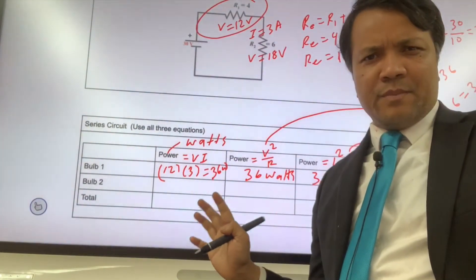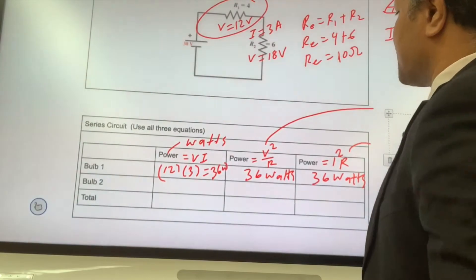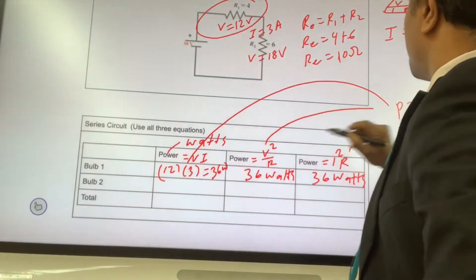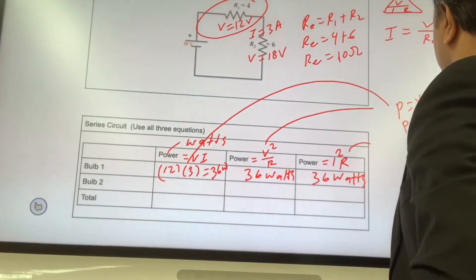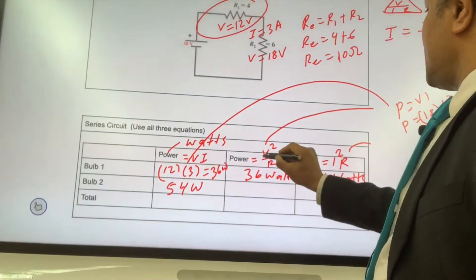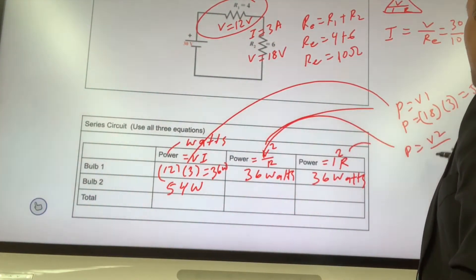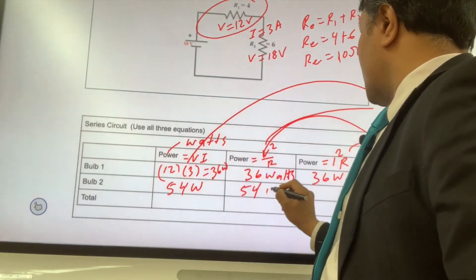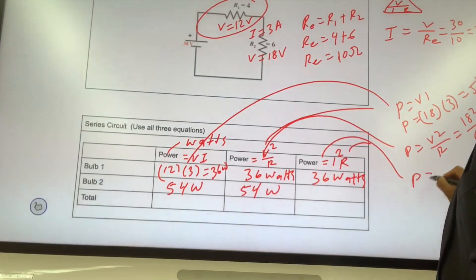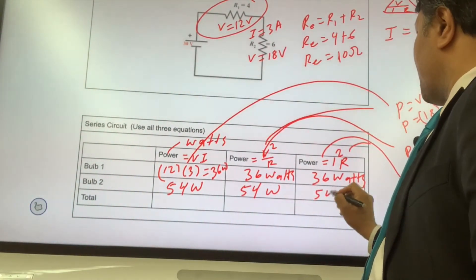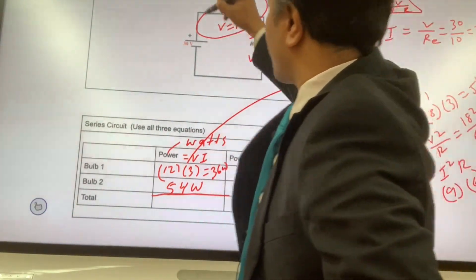Now let's find the power for bulb number two. Using P = VI: the voltage across bulb two is 18V and the current is 3A, so power equals 54 watts. Using P = I²R: I² is 9, and R is 6, so 9 times 6 equals 54 watts. Both equations confirm 54 watts for bulb two.